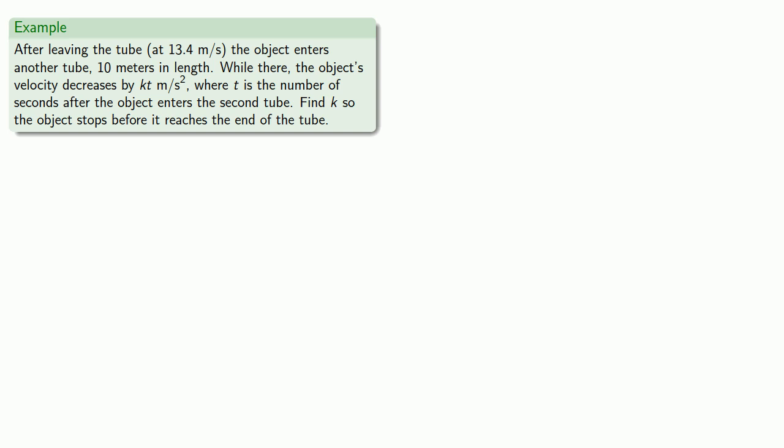Finding when the object stops says something about its velocity, and so our velocity is going to be the antiderivative of this acceleration. We do know how rapidly the object was moving at the start, so c is going to be 13.4.